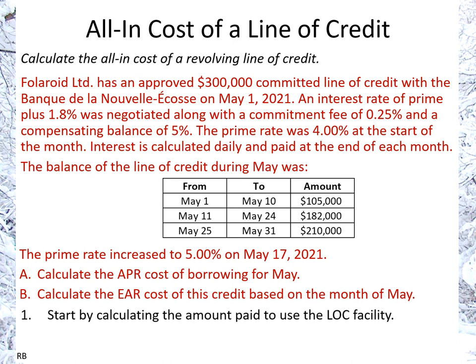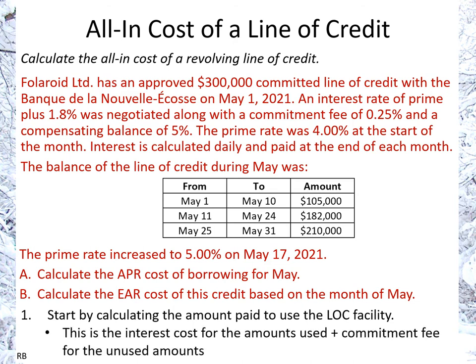We will start by calculating the amount paid to use the line of credit. It is simply the sum of the interest cost for the amounts used and also the commitment fee for the unused amounts. We start off with prime plus 1.8%, which was negotiated, as we can see here.